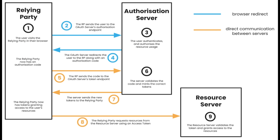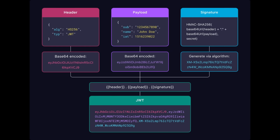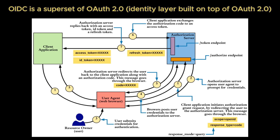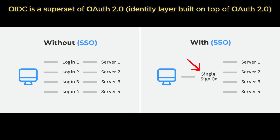OpenID Connect is an authentication protocol built on top of OAuth 2.0. It enables authentication of end users against an authorization server, which verifies the user's identity and issues an ID token, usually a JSON Web Token. This ID token contains information about the user in the form of claims — verified information such as a unique ID, email, or name. As a superset of OAuth 2, OIDC comes with all of OAuth 2's authorization capabilities and then adds authentication. OIDC defines a user info endpoint that clients can query for additional profile data, as well as a discovery mechanism that lets apps automatically find an identity provider's endpoints and configuration. Together, these features turn OAuth's authorization flows into full-fledged single sign-on login flows.